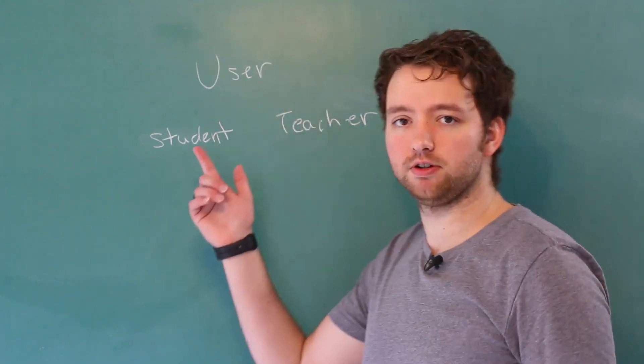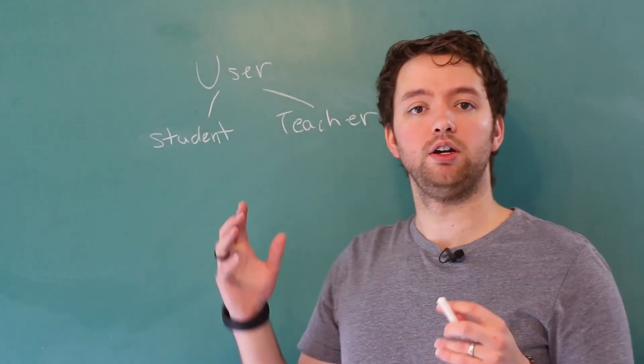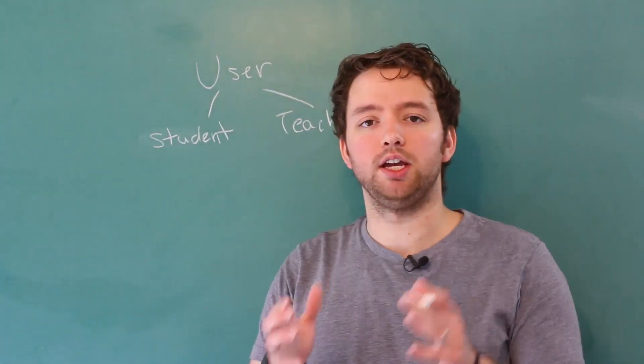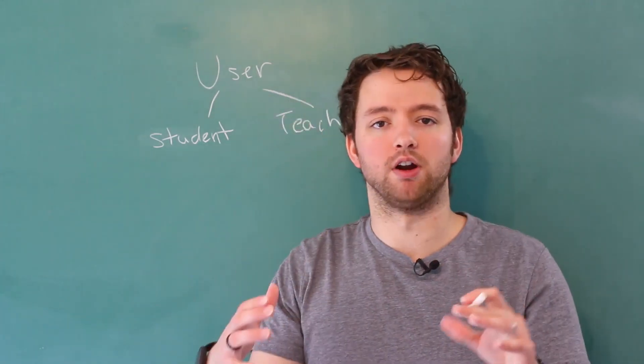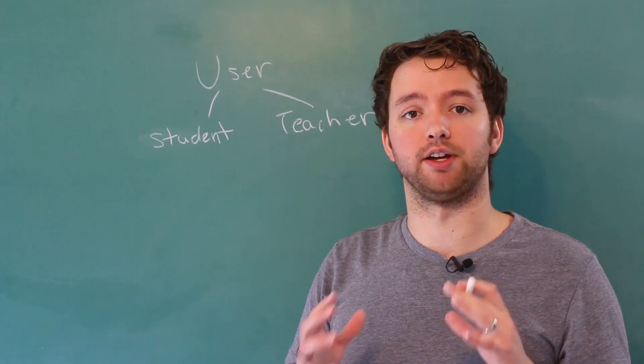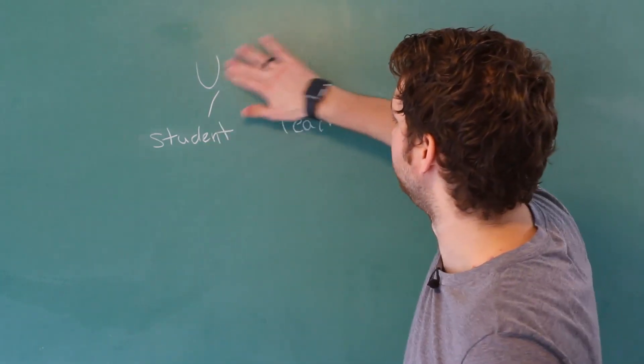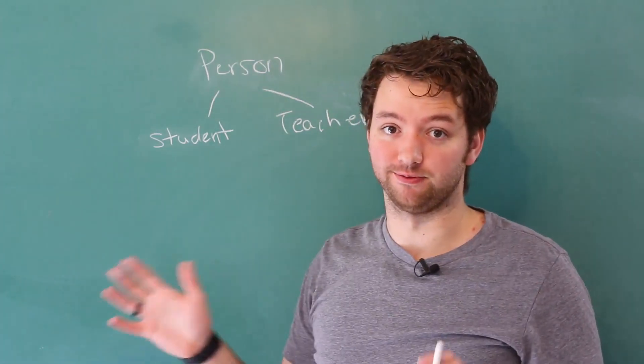Just as an example, if we had a user class and then we had two derived classes, student and teacher, well, you can take a student and you can treat it like a user. Now, I'm thinking in the concept of a web application or something like that. If you wanted to think more real life, you might change user to person, right?